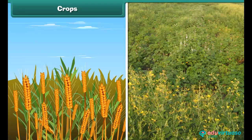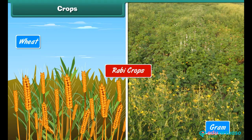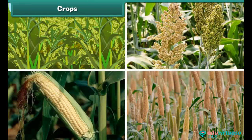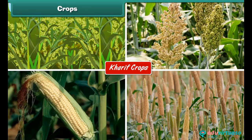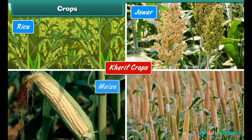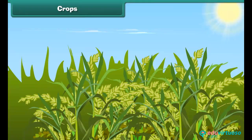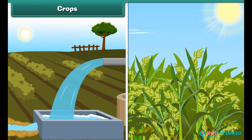The crops which are grown in winter season are called rabi crops — example, wheat and gram. The crops which are grown in summer are called kharif crops — example, rice, jowar, maize, and bajra. Different types of crops require different amounts of sunlight, water, air, and type of soil.